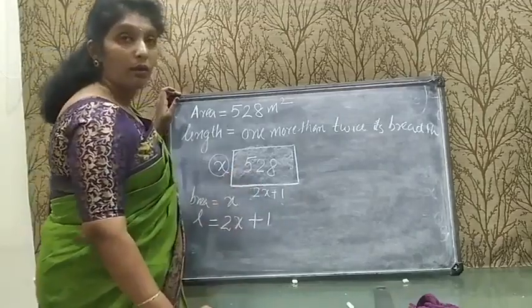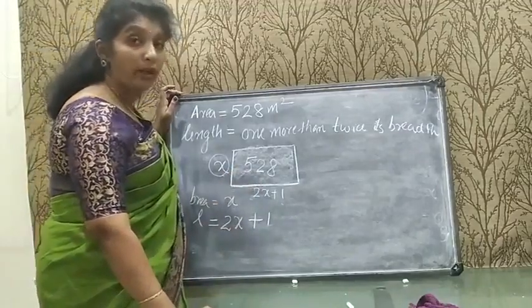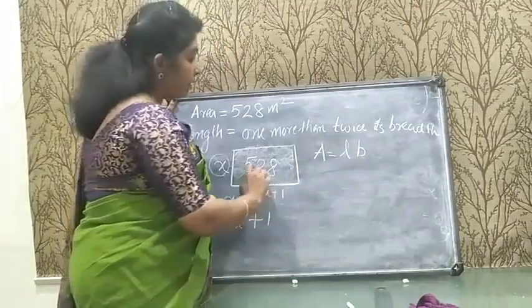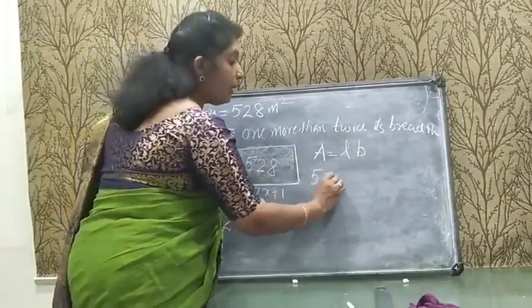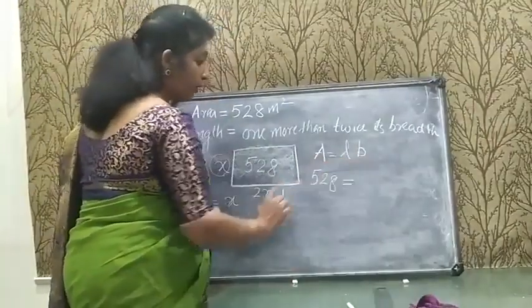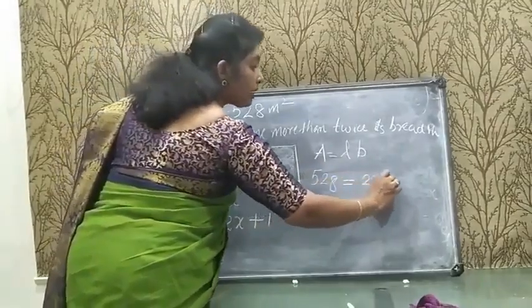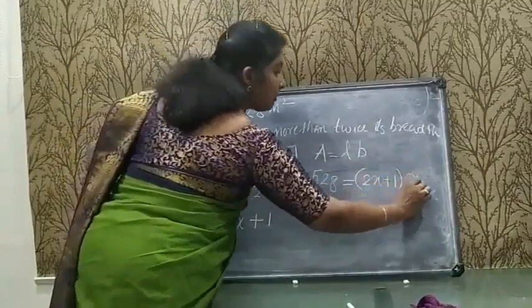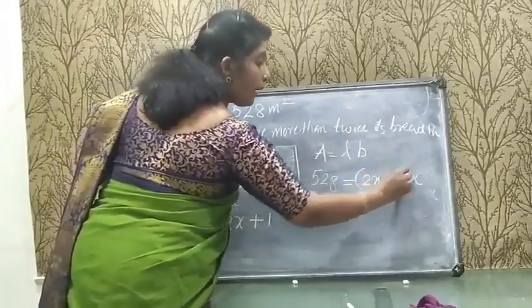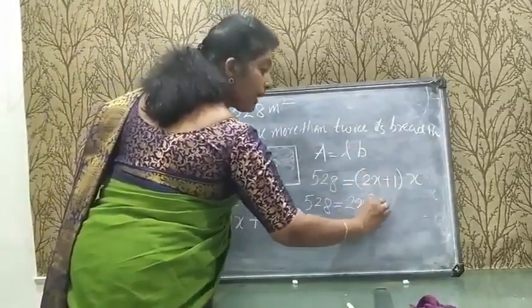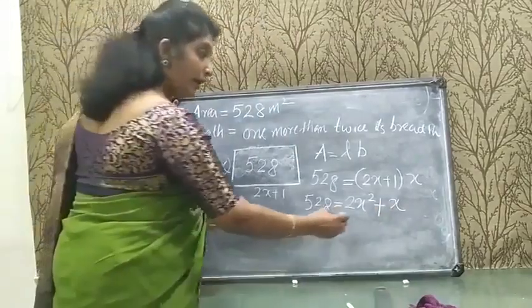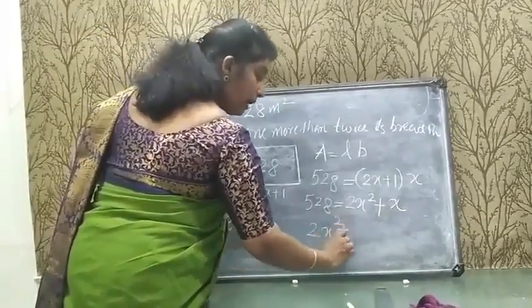Area equals length into breadth. The area is given as 528, so 528 = (2x + 1) × x. Expanding: 528 = 2x² + x.